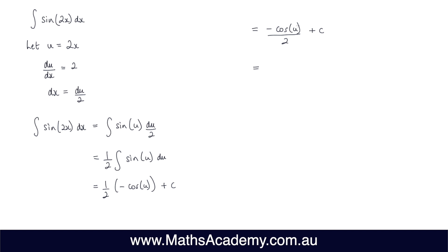And the last thing we need to do is to substitute back in for u. And we know that u is 2x. So we've got negative cosine of 2x and that's all over 2 plus the constant of integration.